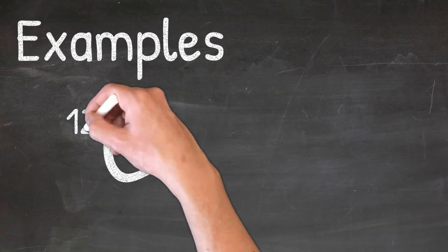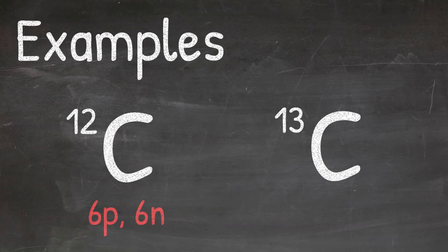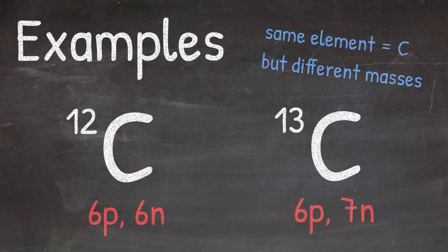In this example, we have carbon-12 and carbon-13. We know that carbon-12 will have 6 protons and 6 neutrons. It has 6 protons because that's the atomic number from the periodic table. The mass number is 12 because that's the number we see in the top left corner, so in order for the mass to be 12, we also need 6 neutrons. For carbon-13, this also has 6 protons. The reason it has the same number of protons as carbon-12 is because they are both the element carbon. In order for the mass of carbon-13 to be 13, that would mean we need 7 neutrons. These represent isotopes because we have the same element, carbon, but they have different masses — one has a mass of 12 and one has a mass of 13.